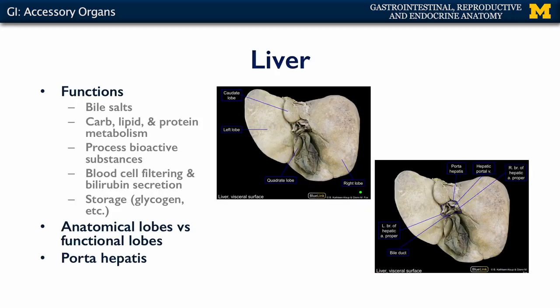The liver is the body's largest gland and its functions are varied. It secretes bile salts. It's important for the metabolism of carbohydrates, lipids, and proteins. It helps us to process bioactive substances such as pharmaceuticals and toxins. It's important in serving the cardiovascular system by helping to filter out defunct red blood cells and then secrete bilirubin, which is the byproduct of that process. And it's also important for storing glycogen, which is one of the easy forms of storing glucose for the body.